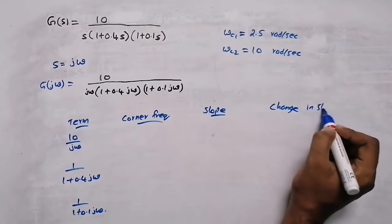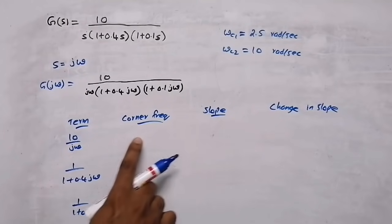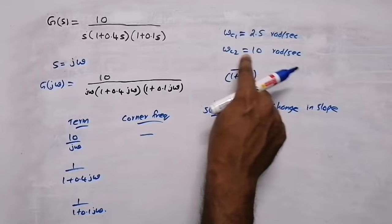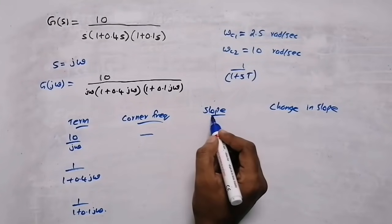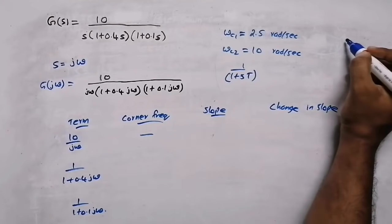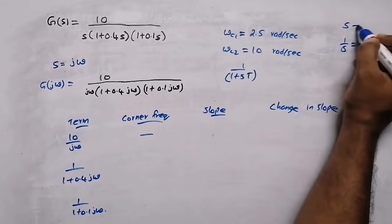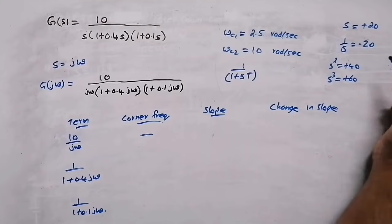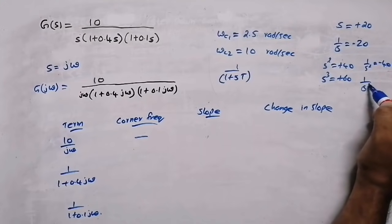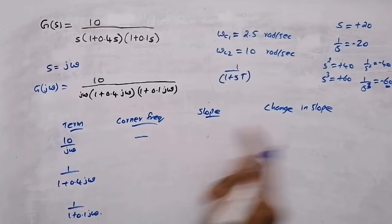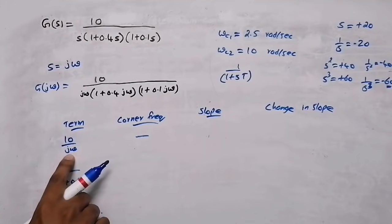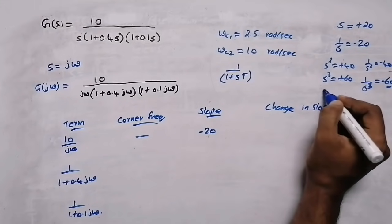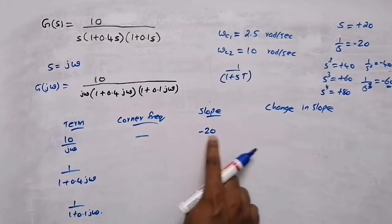For the first term 10/jω, there is no corner frequency. The slope rule: if s (jω) is in the denominator, slope is −20 dB/decade; if in the numerator, +20. For s² denominator it's −40, s³ denominator is −60, and so on. Since jω is in the denominator here, the slope is −20 dB/decade. There is no change in slope for the first term since we are starting.